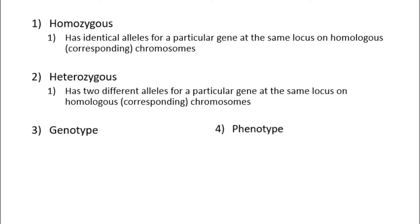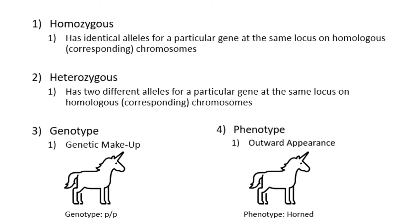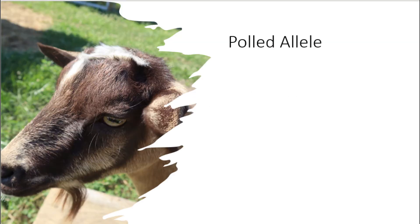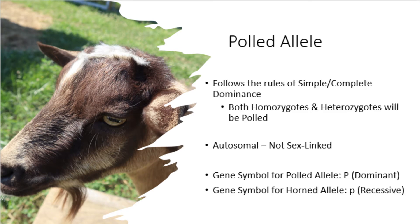The last terms are genotype and phenotype. A genotype is the genetic makeup, whereas the phenotype is the outward appearance. The polled gene follows the rules for simple dominance, meaning a goat will be polled regardless of whether it is homozygous or heterozygous for the polled allele. The polled allele is autosomal, so it has an equal chance of passing to offspring regardless of whether the dam or sire is polled. The gene symbol for the polled allele is a capital P, and the gene symbol for the horned allele is a lowercase p, because the polled allele is dominant to the horned allele.